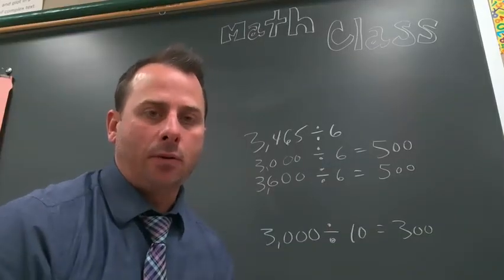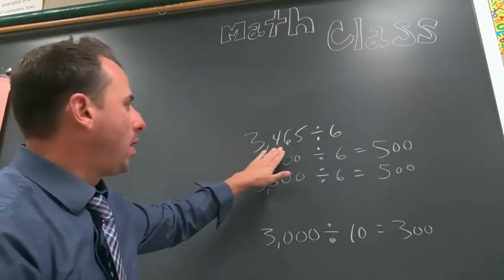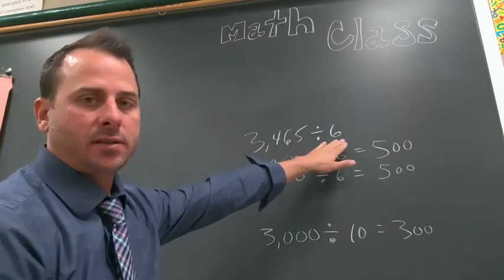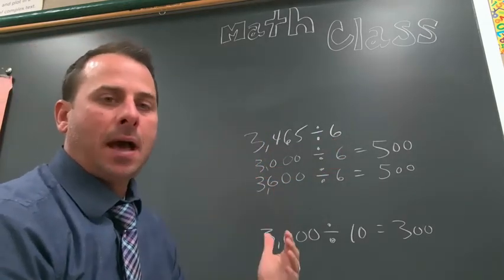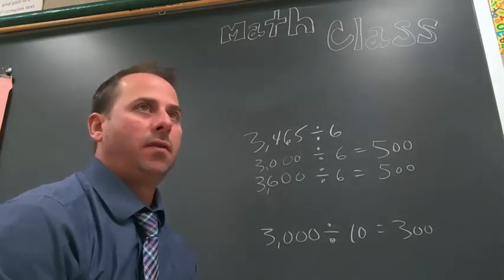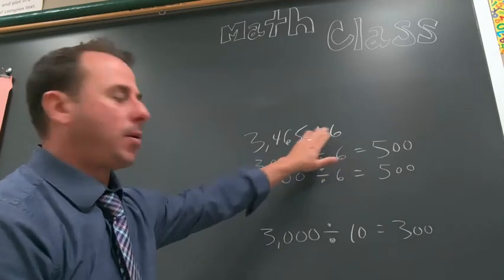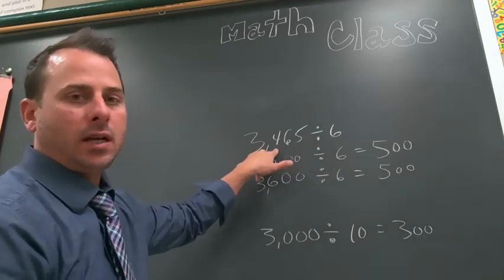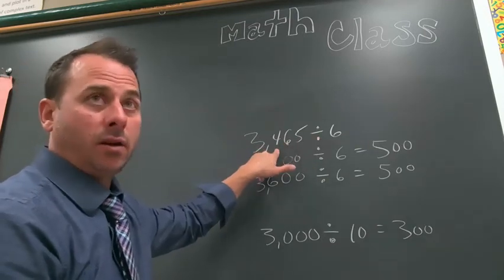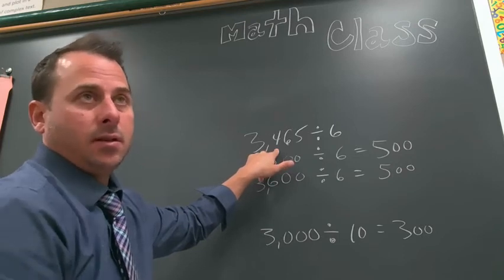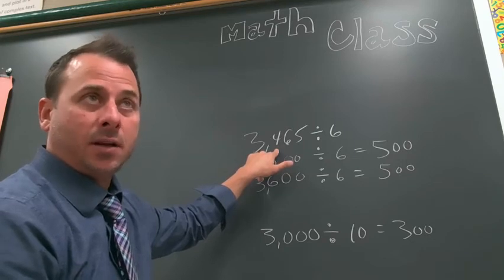Let's take a look at an example of compatible numbers. The original problem is 3,465 divided by 6. If you think about the idea of compatible numbers, you're trying to think of fact families that go together. So six times what number would get me close to 34?